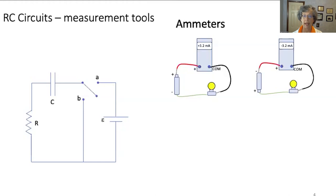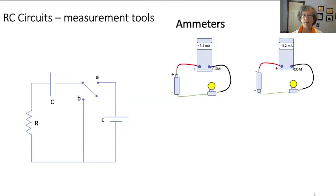If the current passes through the ammeter from red to black, the ammeter reading is positive. This explains the circuit on the left: current leaves the positive terminal of the battery, enters the ammeter through the red lead, exits through the black lead, travels through the bulb and back to the battery's negative terminal. If current passes through the ammeter in the opposite direction — through the black lead and out the red — the ammeter reading will be negative. The sign of the ammeter reading can be used to designate the direction of current through the meter, so we can use the sign as a valuable tool.